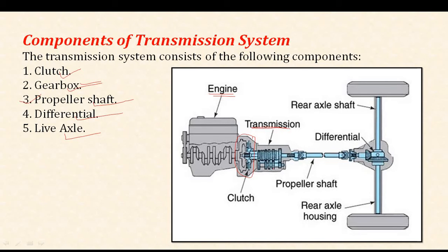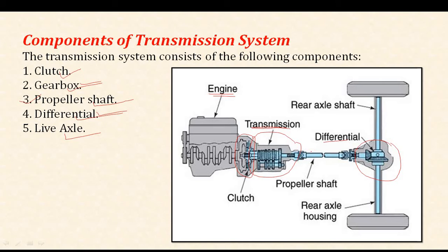The second component is the gearbox. The gearbox is the transmission system in which, by variation in the ratios of speed, the power from the engine — through the clutch and through the gearbox — is delivered to the rear axle. Next is the differential. The differential converts the rotary motion of the shaft, and the power from the engine is transmitted in such a manner so that the rear axle gets that power.